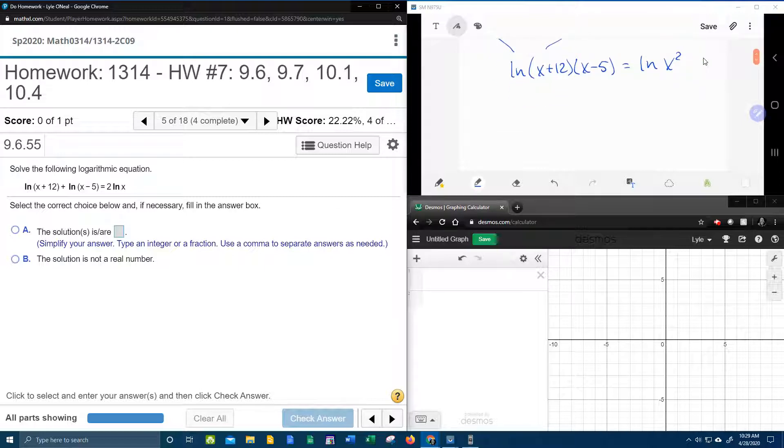Now, look what I've got. I've got natural log of some stuff equals natural log of some stuff. All I have is two natural logs, no other terms, and that means that the natural logs can cancel, and I'll have no more logs to deal with. But I do have a binomial times a binomial, the x plus 12 times x minus 5. We're going to have to FOIL it.